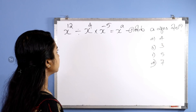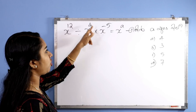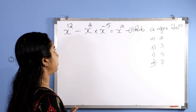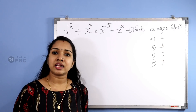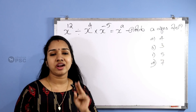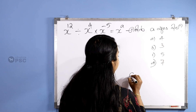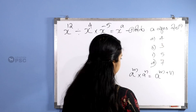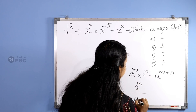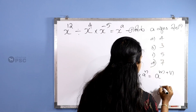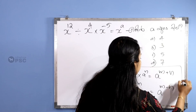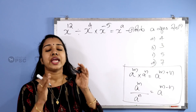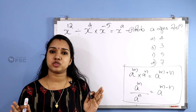First question: x raised to 12 divided by x raised to 4 into x raised to minus 5 is equal to x raised to a. We are going to find the value of a.